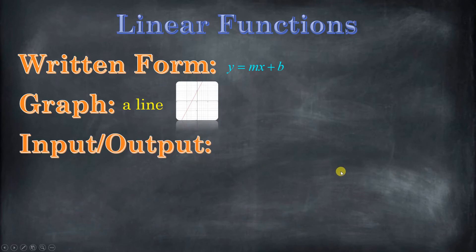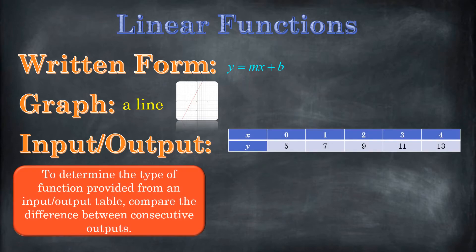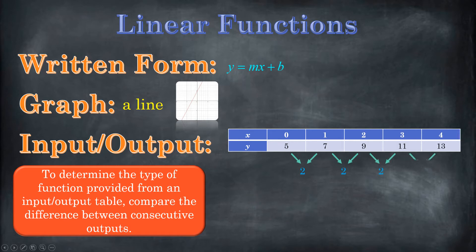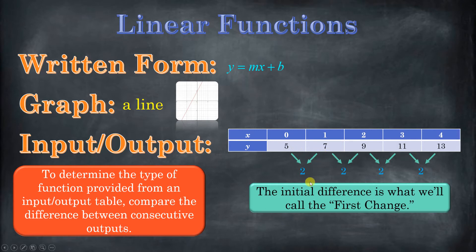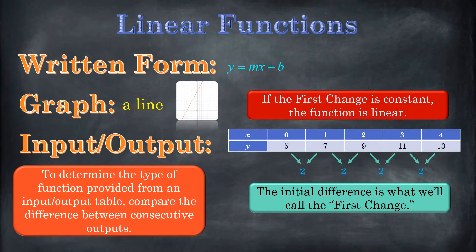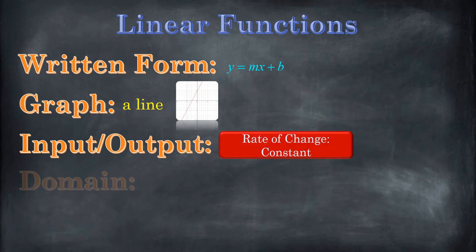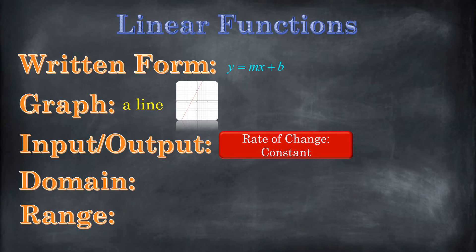What if you were given an input-output table and you were being asked what kind of function it is? Well, this is what's going to happen if you have a linear function. You're going to compare the consecutive outputs. X is the input, y is the output. It doesn't matter how the table is formed — it could be vertical or horizontal. You just compare consecutive outputs. The difference between these outputs is two, and the difference between those outputs is two, and so on. We're going to call this the first change. If our first change is constant, that means we have a constant slope and our function is linear.